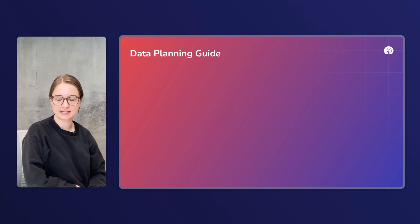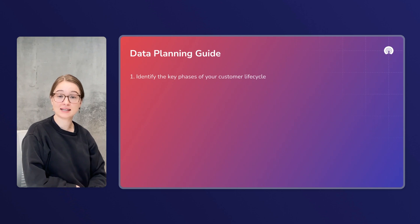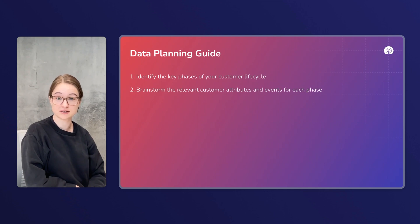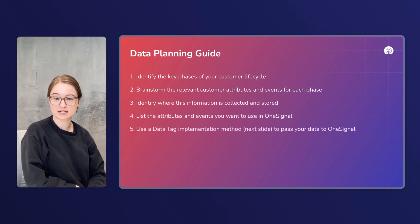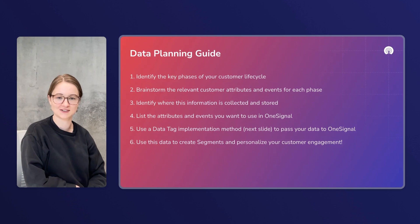To get you started with data planning, here's a handy guide. First, identify the key phases of your customer lifecycle. Then, brainstorm the relevant customer attributes and events for each phase. Identify where this information is collected and stored currently. Then list the attributes and events you want to use in OneSignal. Use a data tag implementation method, which we'll cover next, to pass your data to OneSignal. And then use this data to create segments and personalize your customer engagement.